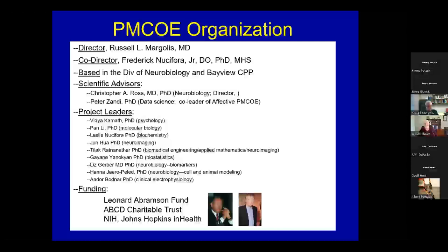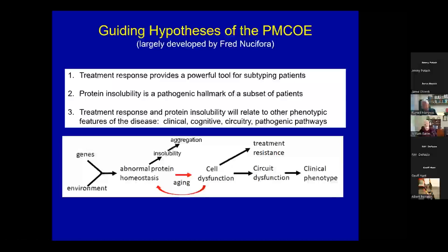The guiding hypotheses of this PMCOE, largely developed by Fred Nusifora, are: one, that treatment response provides a powerful tool for subtyping patients; two, that protein insolubility is a pathogenic hallmark of at least a subset of patients — another way of defining and improving upon the heterogeneity of schizophrenia; and three, that treatment response and protein insolubility in some patients will relate to other phenotypic features of the disease — the clinical, the cognitive, various circuitry abnormalities, and ultimately cellular pathogenic pathways.